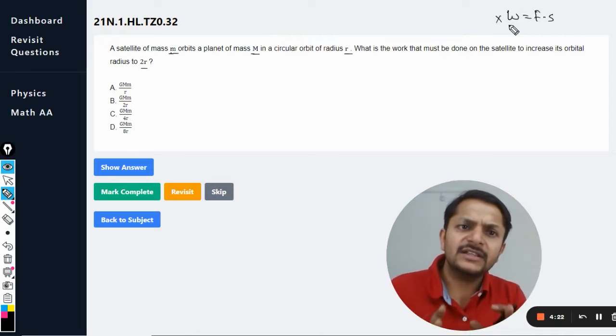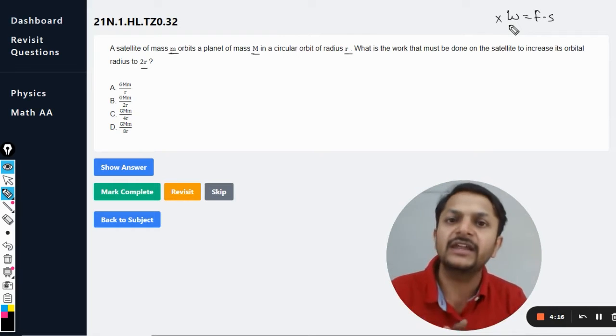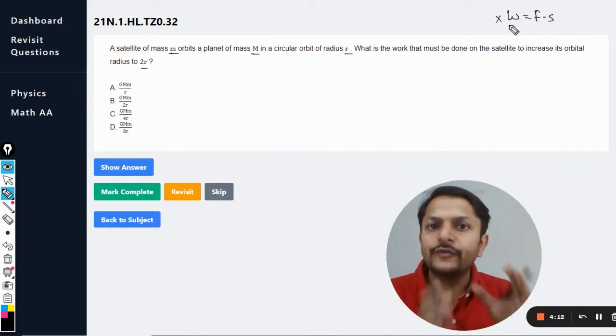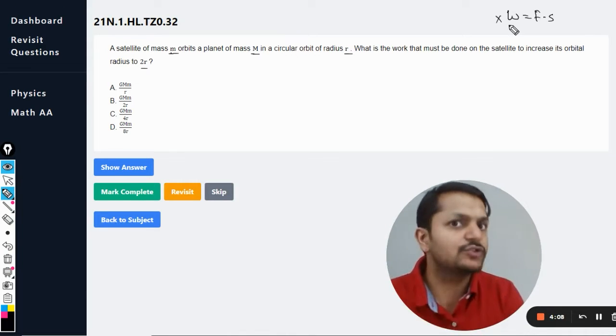This is highly specific to topic 2, but when it comes to topic 10, when it comes to fields - gravitational field, mechanical magnetic field, or electrostatic fields - we do not go for such formulas. Instead we go for work is equal to change in energy.